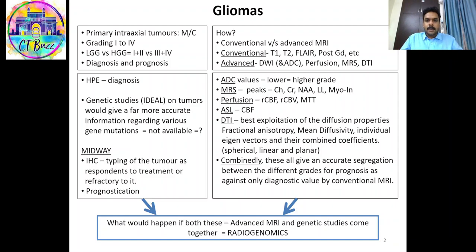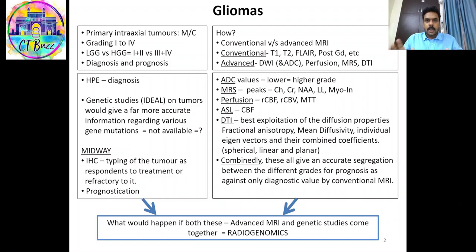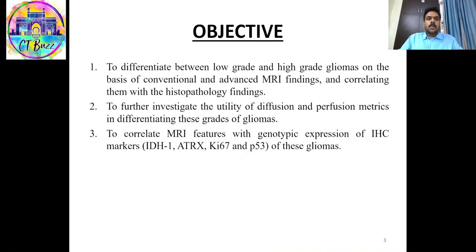The various advanced MRI techniques used include diffusion weighted imaging, diffusion tensor imaging, magnetic resonance spectroscopy, and perfusion imaging. The gold standard for diagnosis remains pathological examination and ideally genetic studies, with immunohistochemistry serving as a midway option in resource-poor settings. When genetic studies come together with radiology, what we get is radiogenomics.